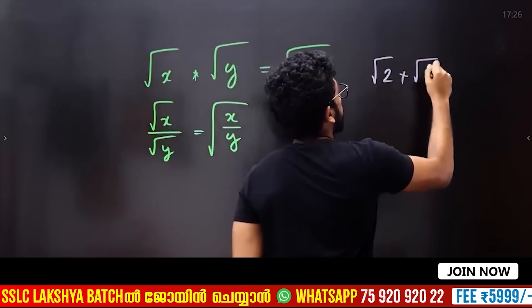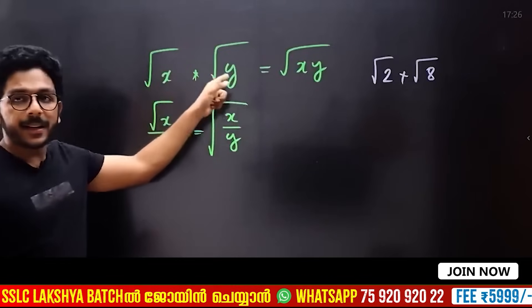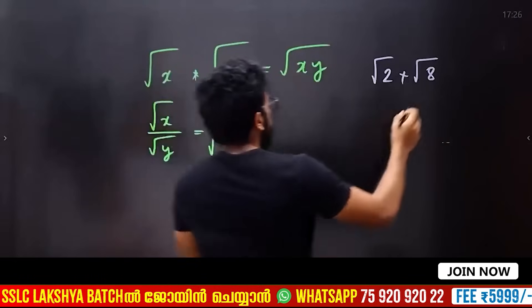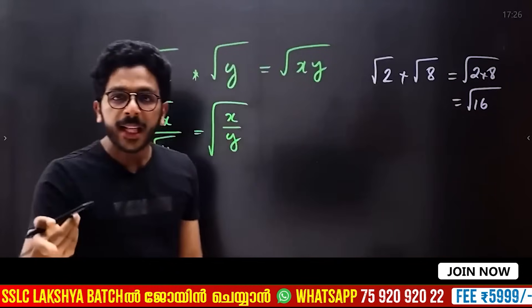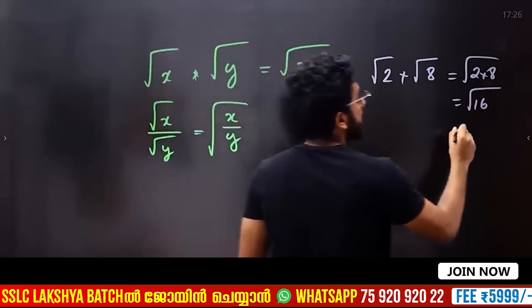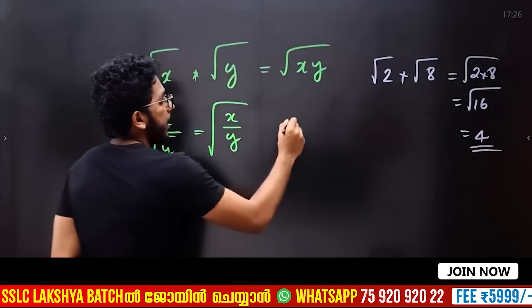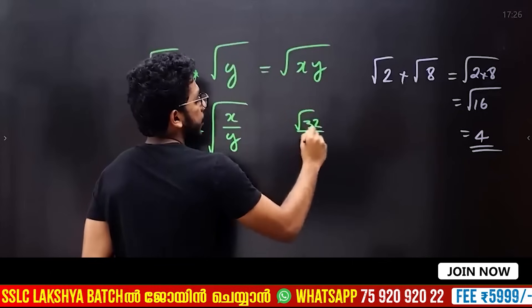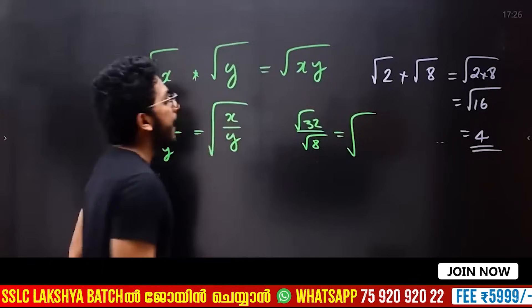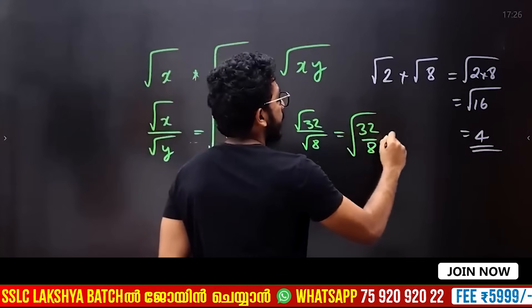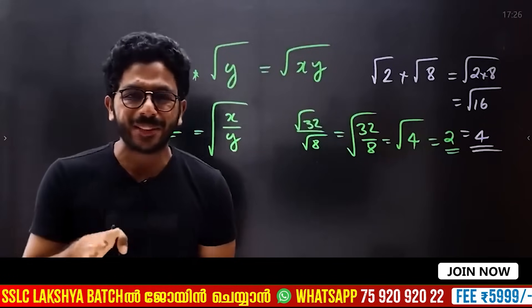Root 2 into root 8. I have a multiplication. If you multiply root x and root y, we multiply them. So root 2 into root 8 is root of 16. The answer is 4. In division: root 32 divided by root 8 is root of 4, which is 2.